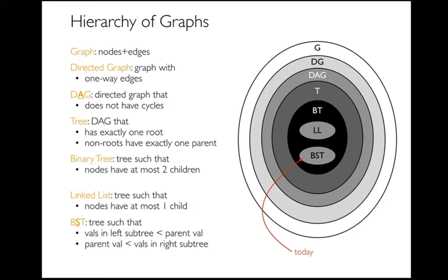A tree is a type of DAG that has exactly one root, and except for the root, every node has exactly one parent. You can imagine things that are DAGs but not trees — for example, if I have four nodes that branch out and then come back together, that would be a DAG that is not a tree. But every tree is a DAG.